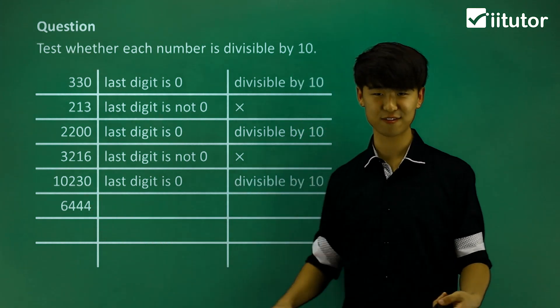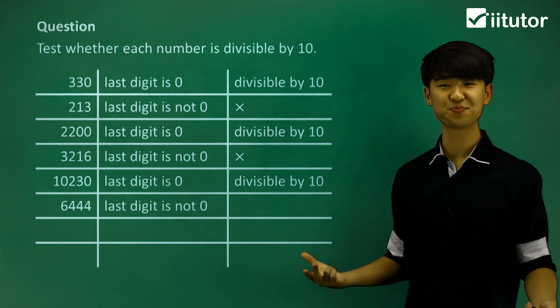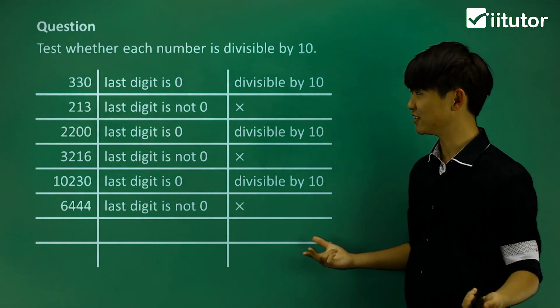6444, obviously the last digit is 4 and it's not a 0, then this is not divisible by 10.